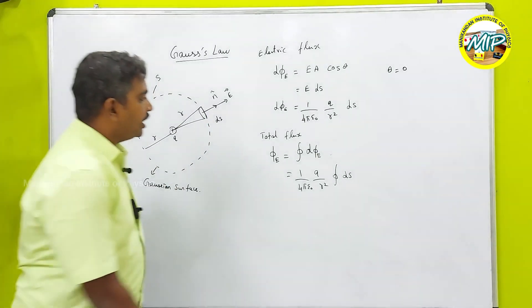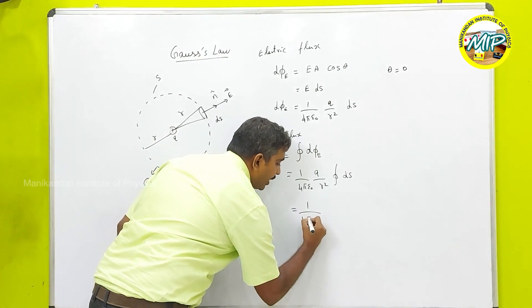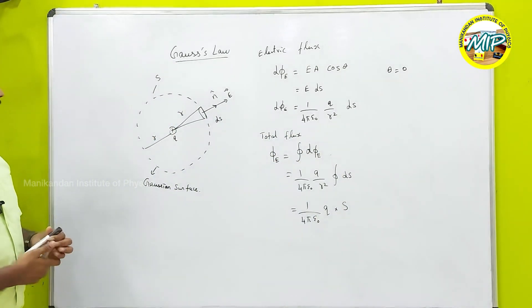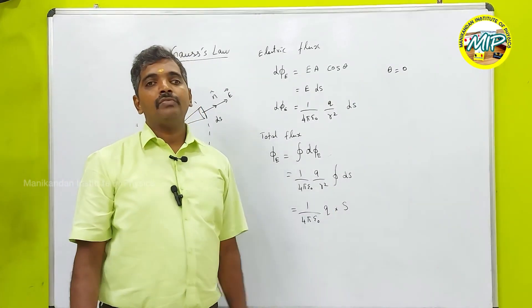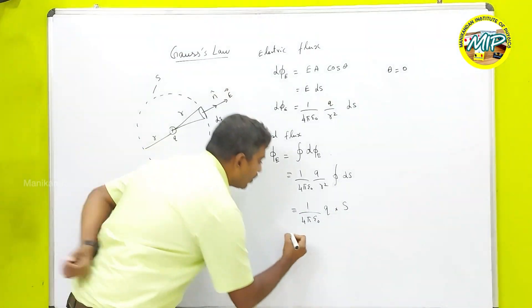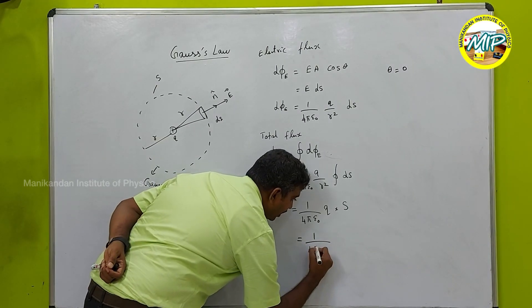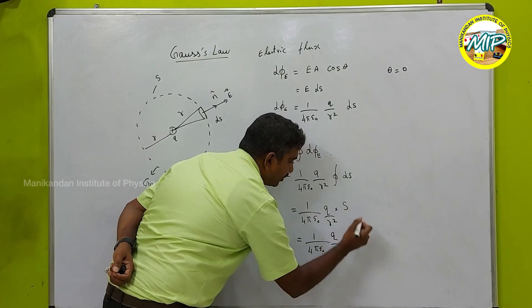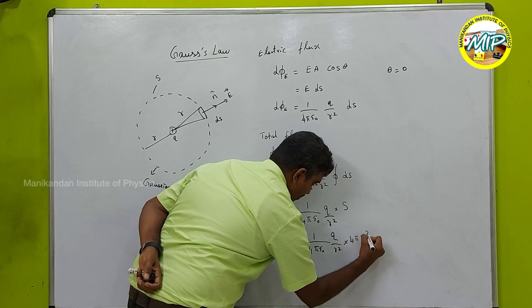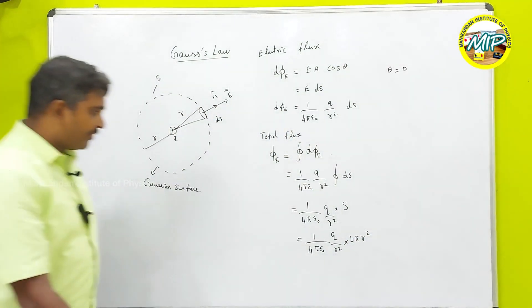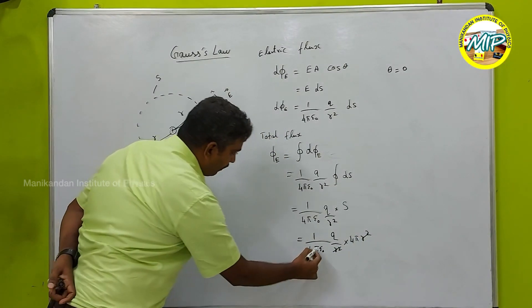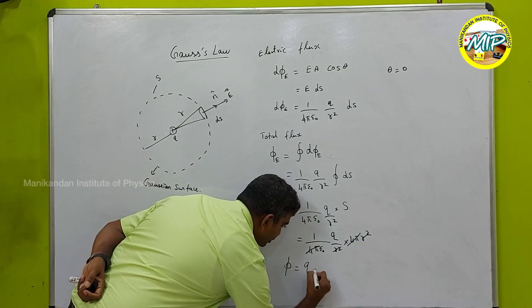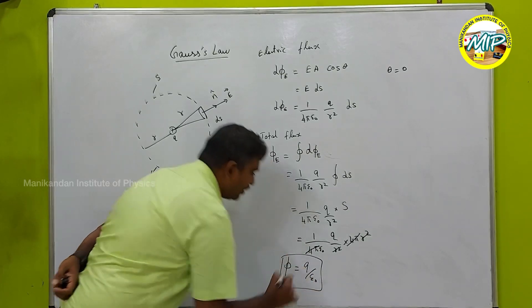Performing the integration over the closed surface gives Φ_E = (1/4πε₀)(Q/r²) × (total surface area of the Gaussian sphere). The total surface area of a sphere is 4πr². So I can write Φ_E = (1/4πε₀)(Q/r²)(4πr²). Cancelling r² with r², and 4π with 4π, the expression simplifies significantly.